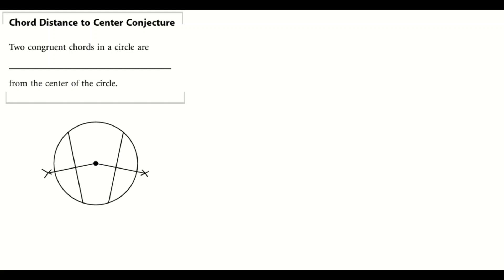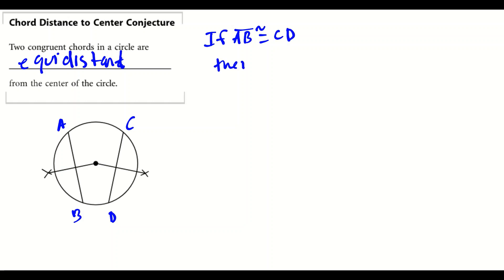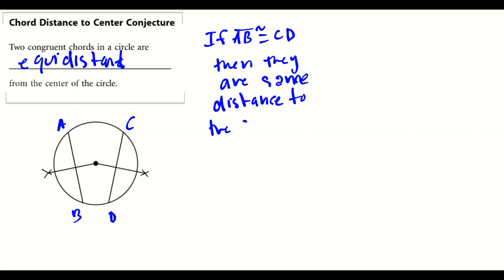Next is the Chord Distance to Center Conjecture: two congruent chords in a circle are equidistant from the center. If chord AB is congruent to chord CD, then they have the same distance to the center of the circle. We can mark those two equal distances from each chord to the center.